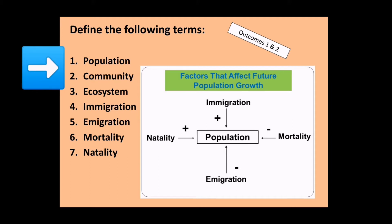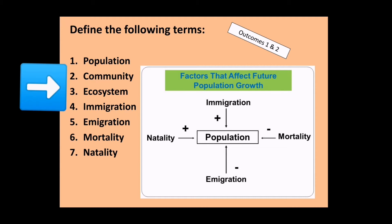A population is a group of the same kind of organism or a specific species that's living together in an area. For example, a group of zebra living together are forming a population of zebra. If you see zebra walk amongst some giraffes and some springbok, all those different kinds together would make a community. Organisms live in an ecosystem, which is a self-perpetuating system that consists of abiotic and biotic factors — the living and non-living things together in an environment — and they're dependent on and influence one another.